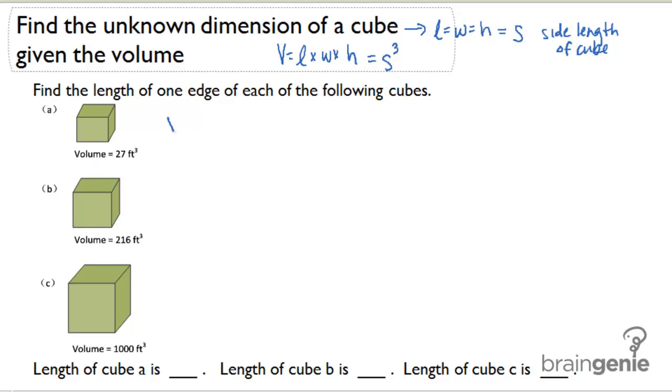Let's take a look at part A. V equals S cubed. Well, the volume here is 27. So I need a number that multiplied by itself twice gives me 27. I can also think of this as the cubed root. I could say S equals the cubed root of 27, which is 3.